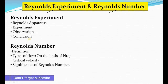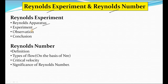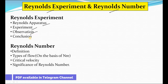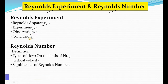In the Reynolds experiment, we are going to see what Reynolds apparatus is all about. Then we will see the experiment, what observations Reynolds observed, and then we will come to the conclusion. Then we will discuss what Reynolds number is, the definition of Reynolds number, types of flow on the basis of Reynolds number value, then critical velocity and critical Reynolds number, and finally the significance of Reynolds number.